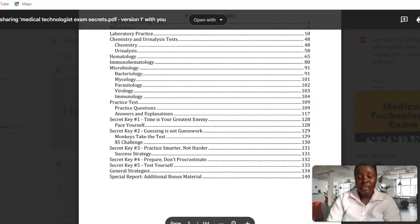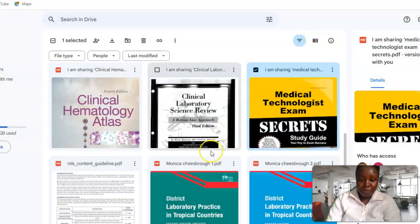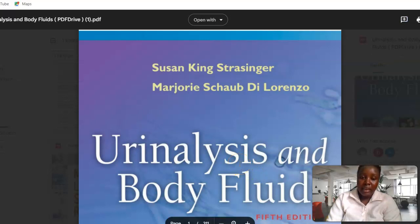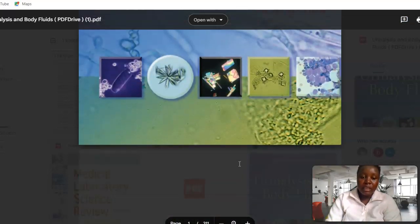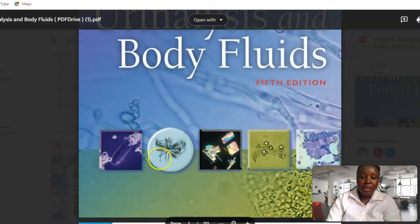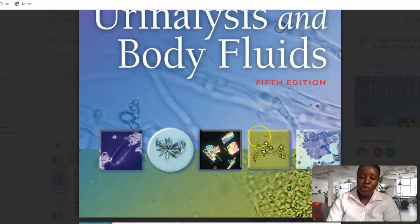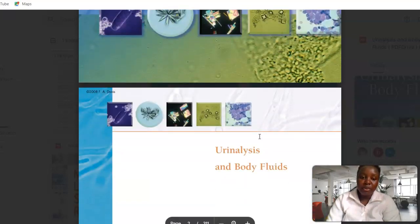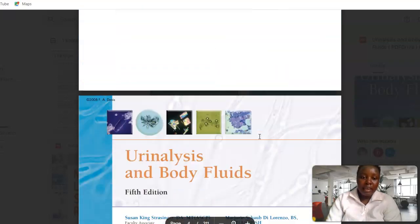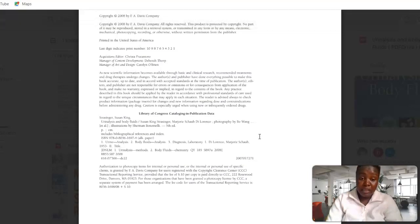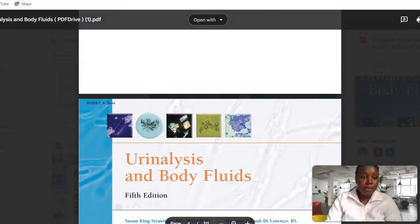Another book that you need to use is Urinalysis and Body Fluid by Susan King. This book gives you pictures on the urine components, the urine crystals, the casts, all the urine deposits that you need to know and the diseases associated with these urine crystals and urine casts and urinary components. It highlights all the body fluids: the CSF, the urine, the peritoneal fluids and all that. It's a good book you can also use in your review.